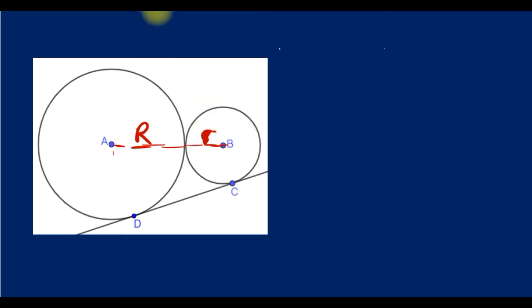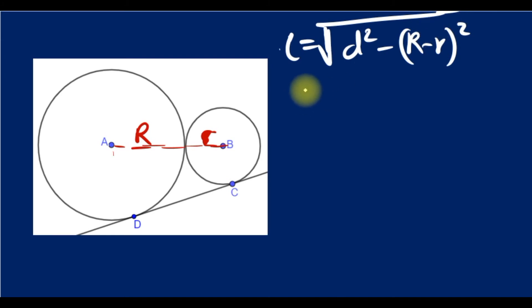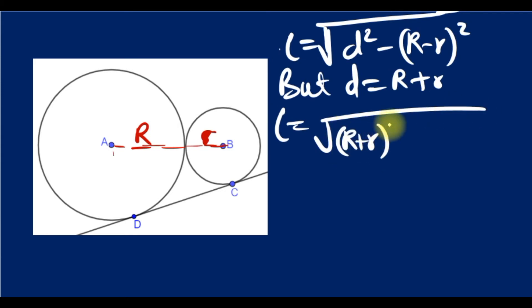Since we know the tangent line CD is square root of d squared minus the square of the difference, but you can easily see that the distance between the two centers is R plus r, so we have l equals square root of (R plus r) squared minus (R minus r) squared.